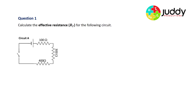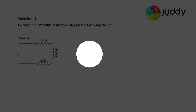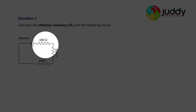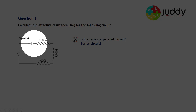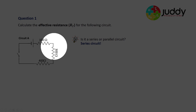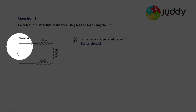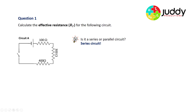Question number one: calculate the effective resistance RT, also known as total resistance, for the following circuit. We have a 100 ohm, a 300 ohm, and a 400 ohm resistor, and we want to replace them all with one single resistor. First, is it a series or parallel circuit? In this case it's a series circuit — there is simply one path the charge can follow from the positive terminal of the battery around to the negative terminal.